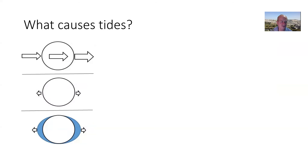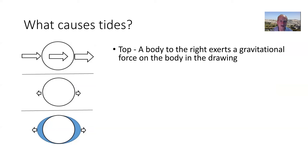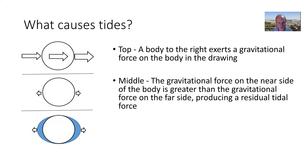So briefly, what causes tides? Look at the drawing here. The top drawing shows a circle — consider that a planet or moon — and there's something to the right causing a gravitational pull. The gravitational force on the near side of the body is greater than the far side, and so that produces a residual tidal force.